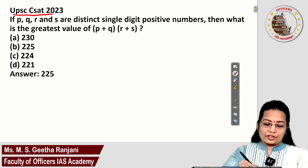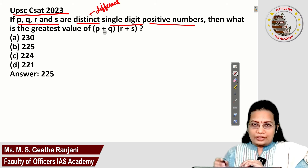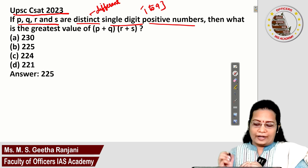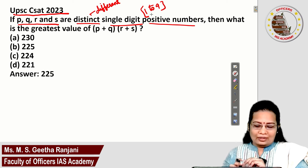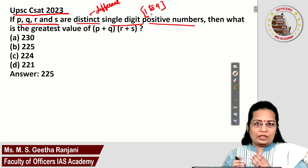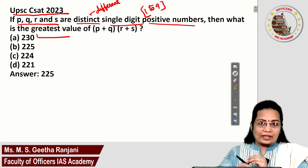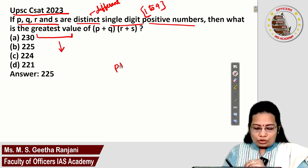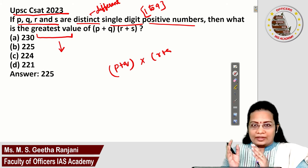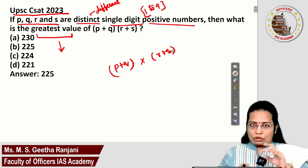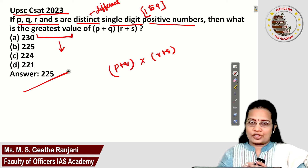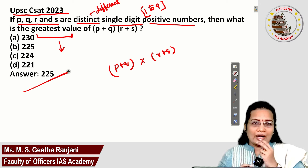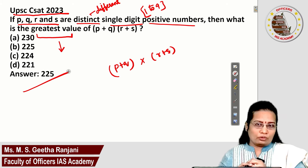Today's question is from UPSC CSAT 2023. Given that P, Q, R and S are single digit positive numbers — meaning we can consider values 1 to 9 — what is the greatest value of (P plus Q) multiplied by (R plus S)? You need to substitute values for P, Q, R, S to get the greatest product. The answer for this question is 225. We can approach this question with two different methods: one is the hit and trial method, and another is using conceptual knowledge.